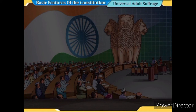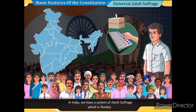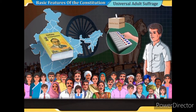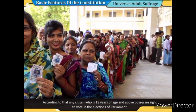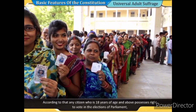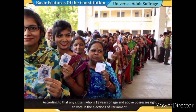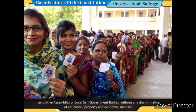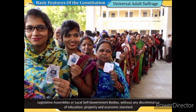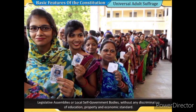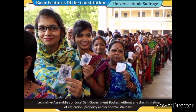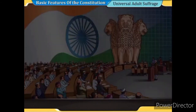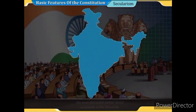India has a system of universal adult suffrage. Any citizen who is 18 years of age and above possesses the right to vote in elections of parliament, legislative assemblies, or local self-government bodies without any discrimination of education, property, economic standard, or other factors.